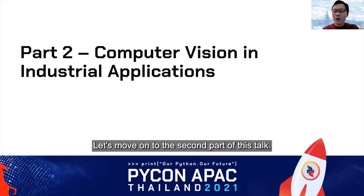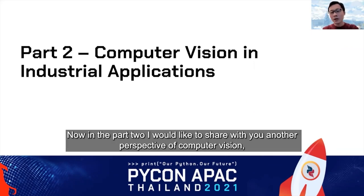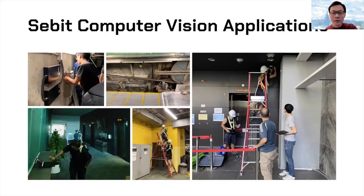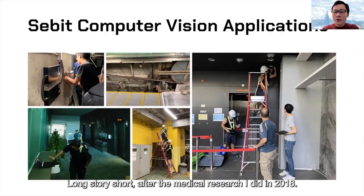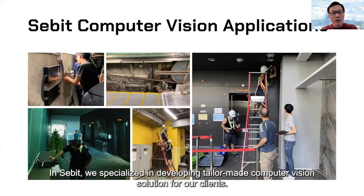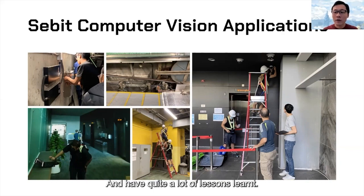Let's move on to part two. In part one, I talked about computer vision in medical research. In part two, I'd like to share another perspective: applying computer vision in real-life applications. After the medical research I did in 2018, I co-founded a company called Cebit with a few partners. At Cebit, we specialize in developing tailor-made computer vision solutions for our clients. Over the past few years, we've created quite a lot of different solutions and accumulated many lessons learned.